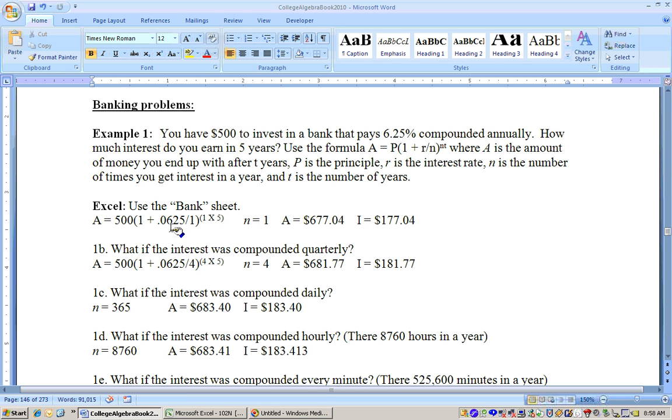Don't round until the end. 1 plus that would be 1.0625, then that would have to be raised to the fifth power, so you'd probably want to use a calculator. Then multiply by 500, and you'd end up with $677.04 is the amount of money in the bank. Now it says how much interest did you earn, so you'd have to subtract off the $500, and you'd get $177.04 in interest.